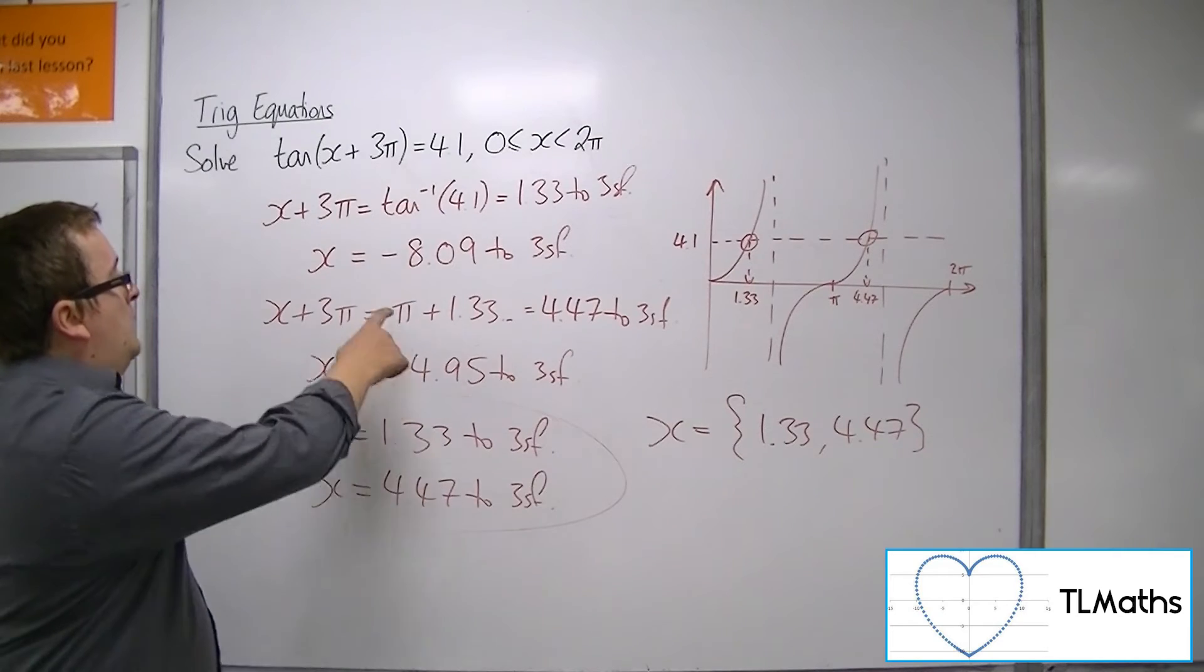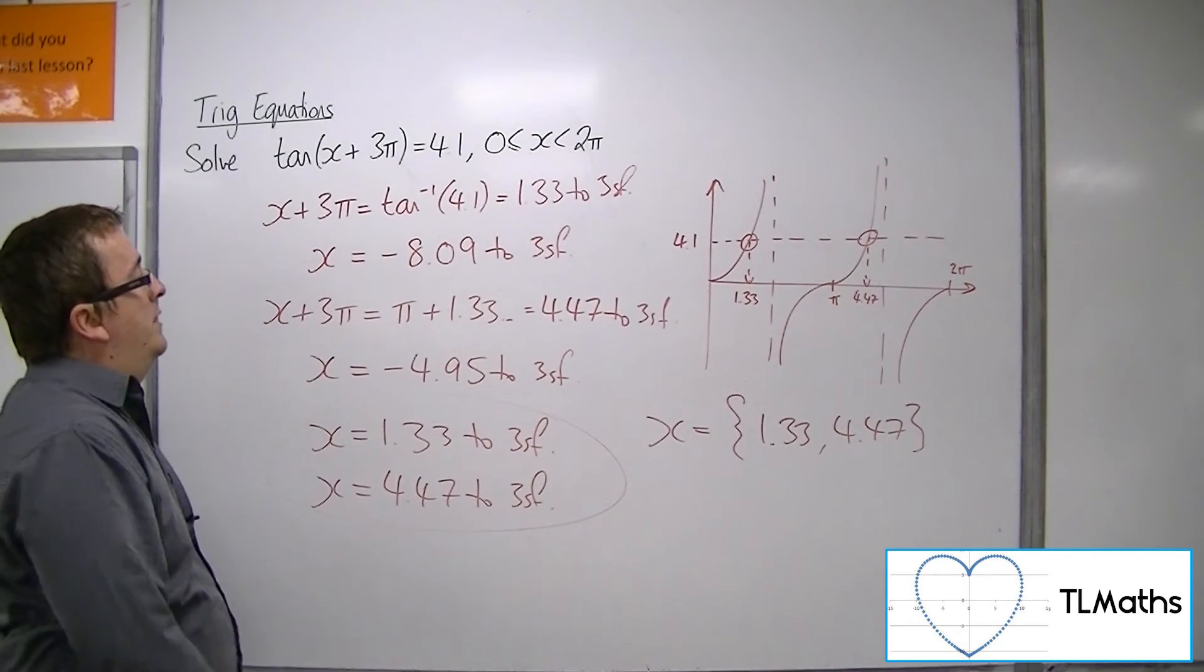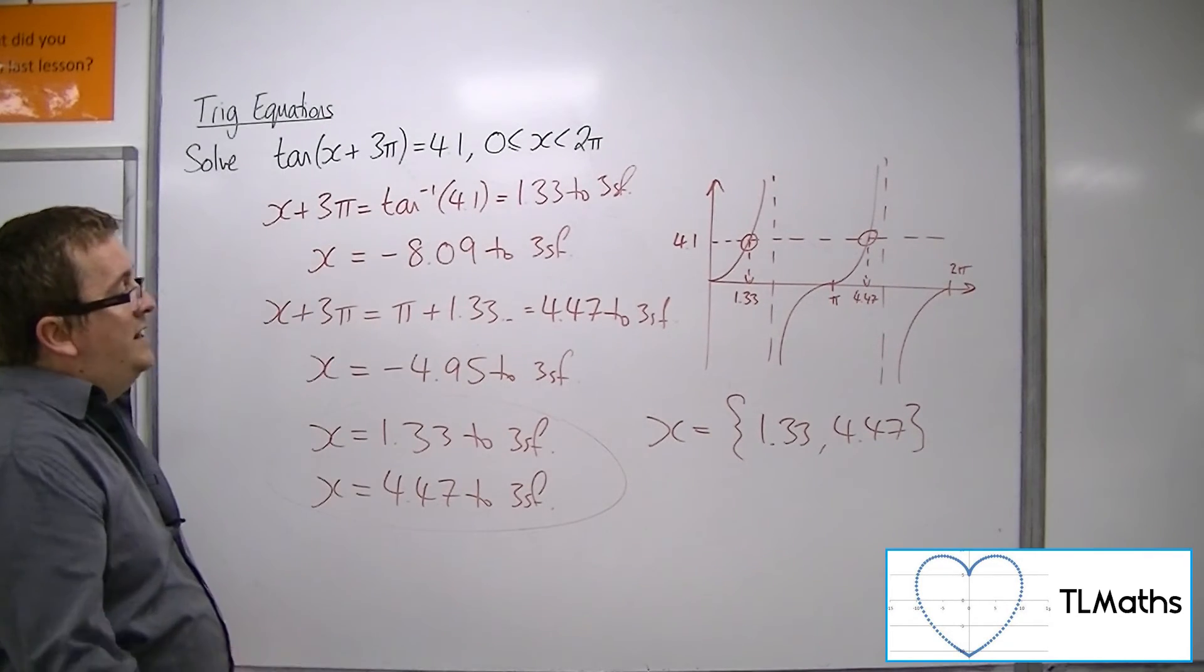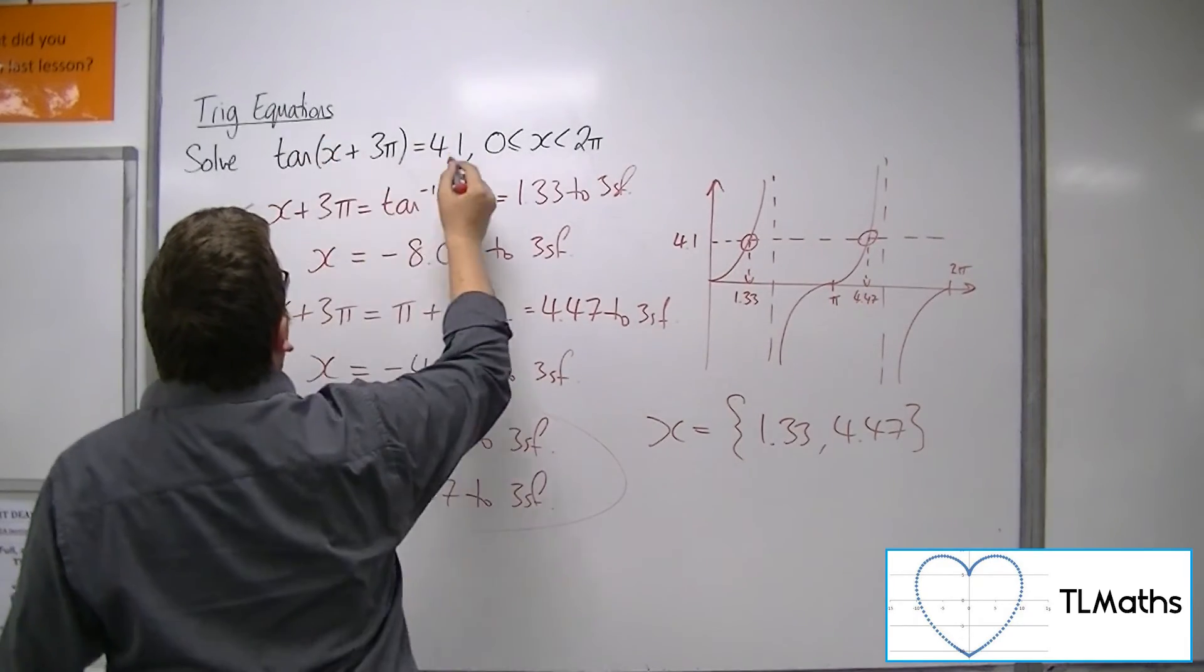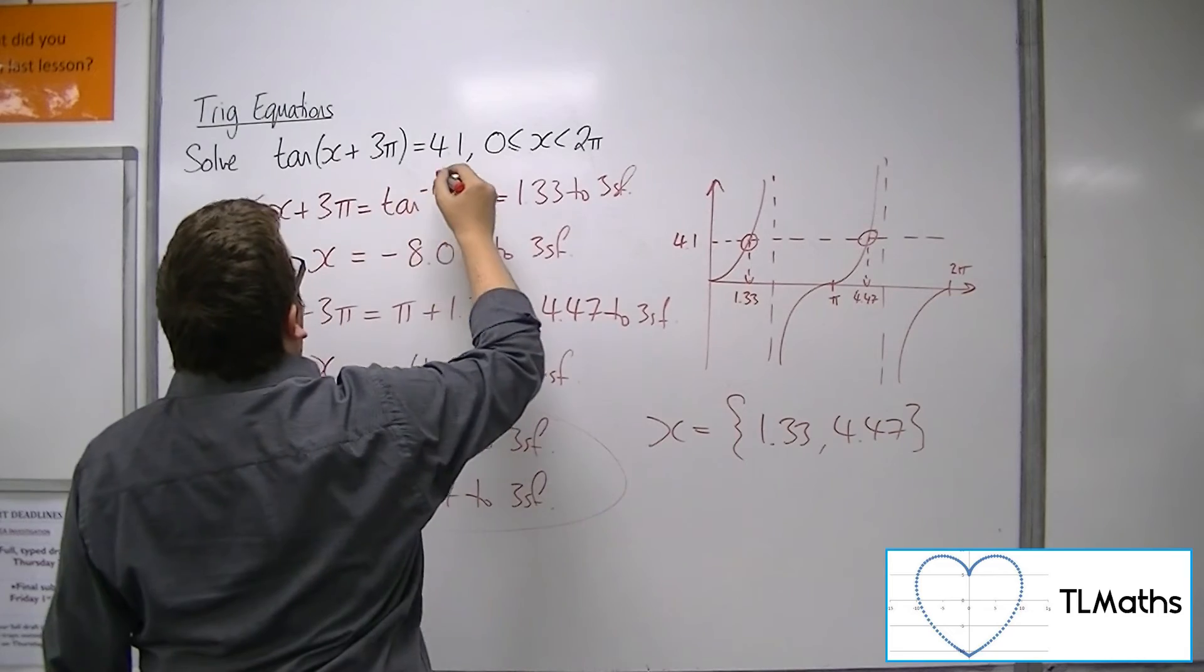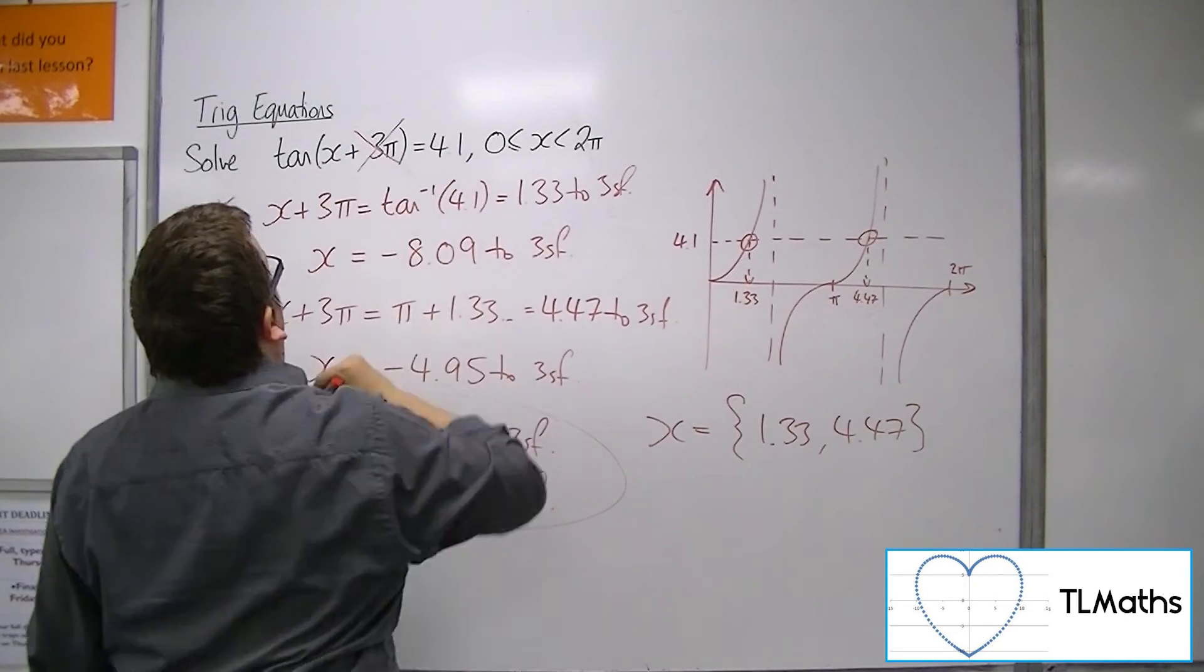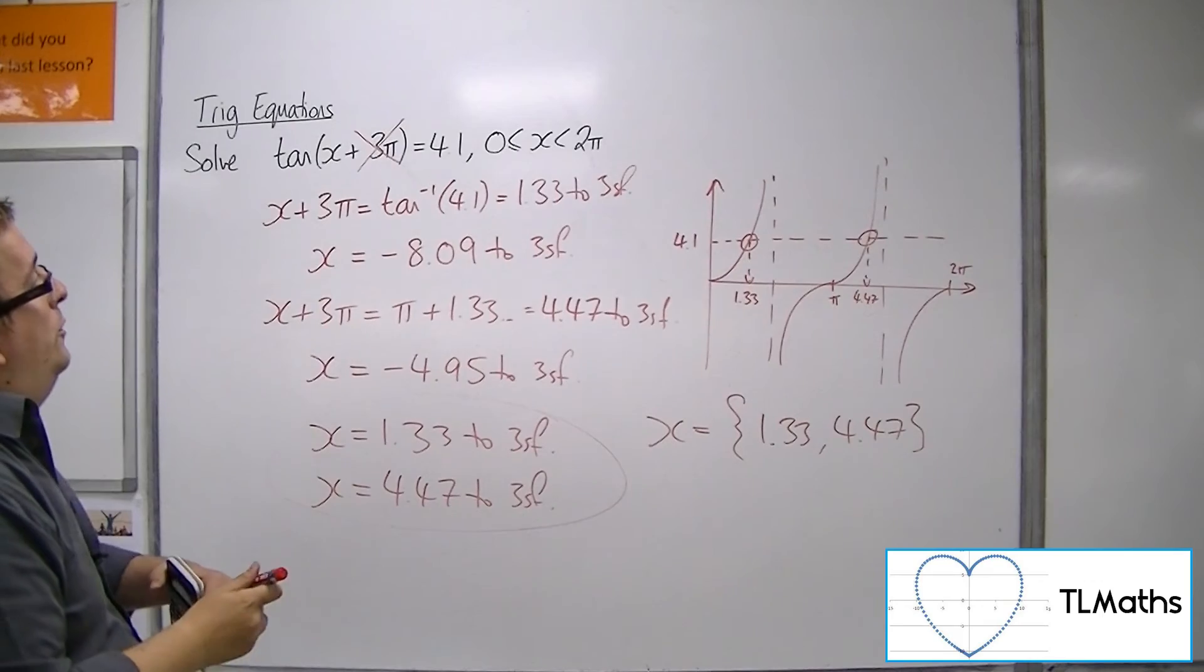So applying the transformation that I did there made no difference. So in actual fact, this is precisely the same equation as tan(x) = 4.1.